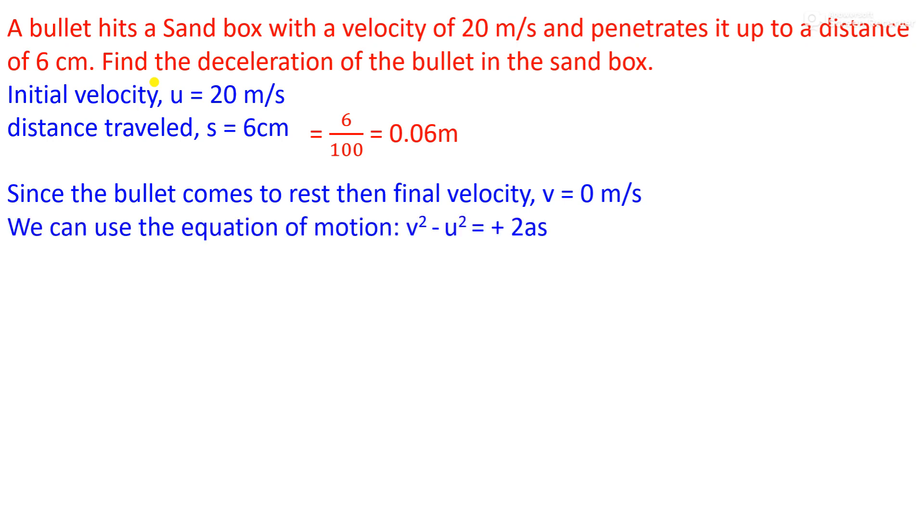By using the equation of motion, v² - u² = 2as, we simply put the values. After solving this we get: 0 - u² = 2as, which gives us (20)² = -2 × a × 0.06. So 400 = -2a × 6/100. After rearranging this equation...